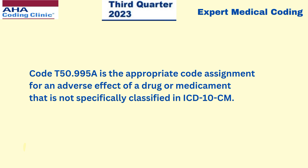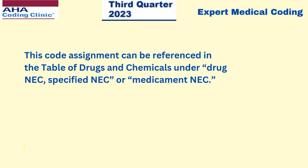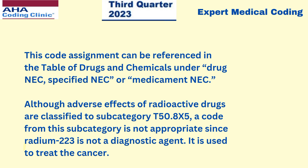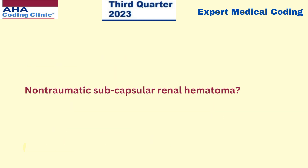The code T50995A is the appropriate code assignment for an adverse effect of a drug or medicament that is not specifically classified in ICD-10-CM. This code can be referenced in the table of drugs and chemicals under drug NEC specified NEC or medicament NEC. Although adverse effects of radioactive drugs are classified to subcategory T508X5, a code from this subcategory is not appropriate since radium-223 is not a diagnostic agent - it is used to treat the cancer.